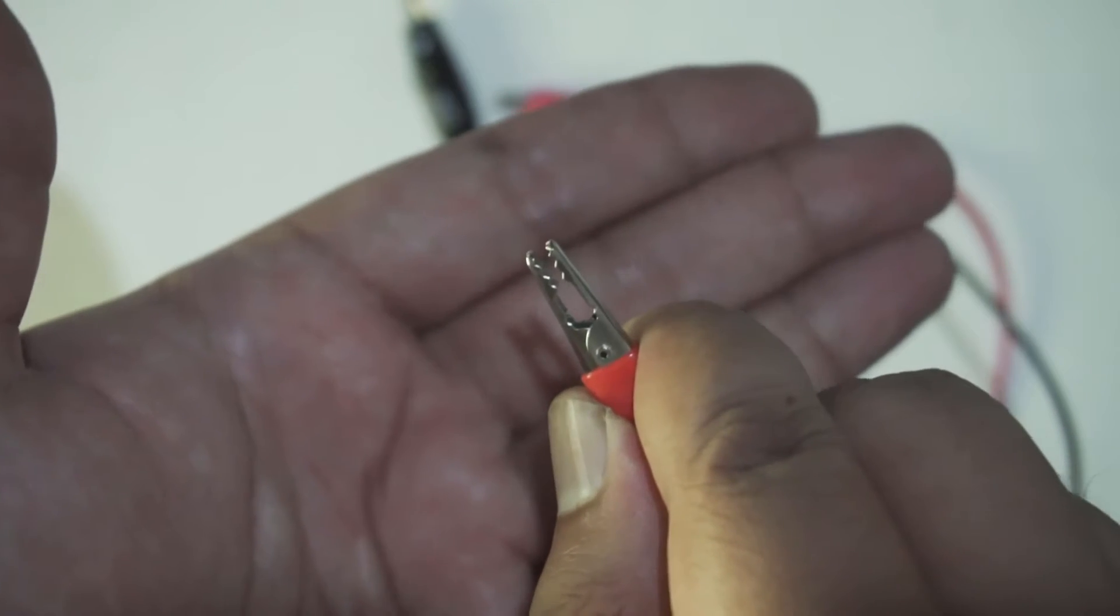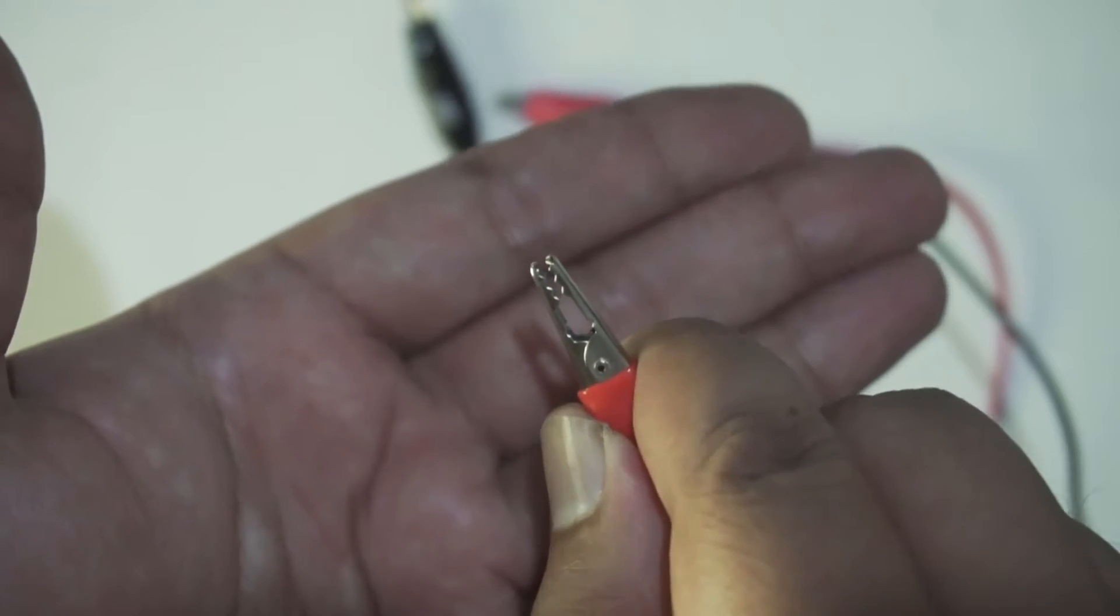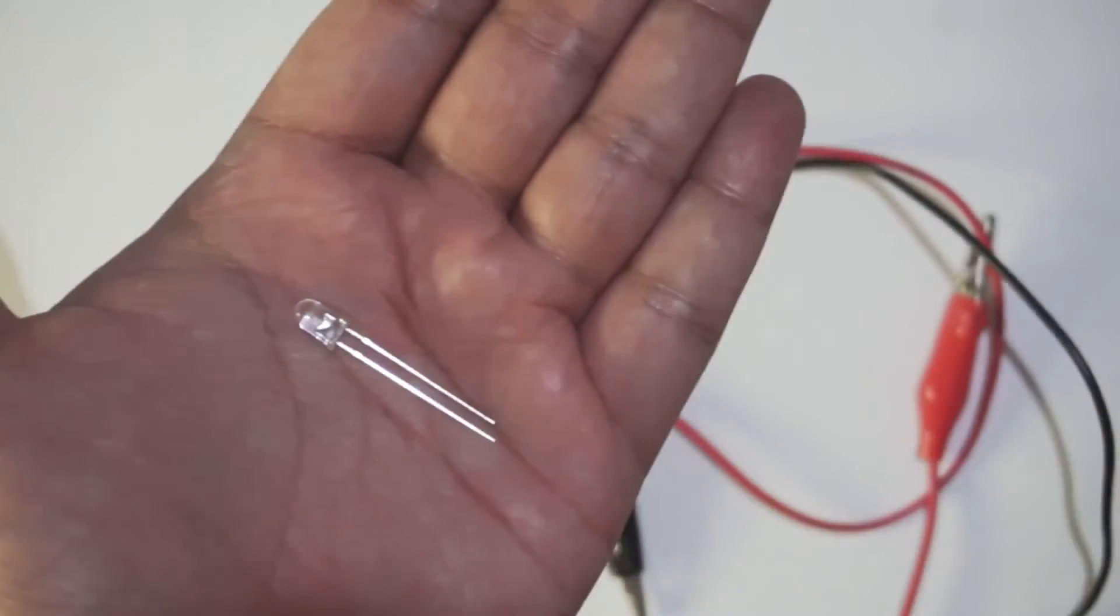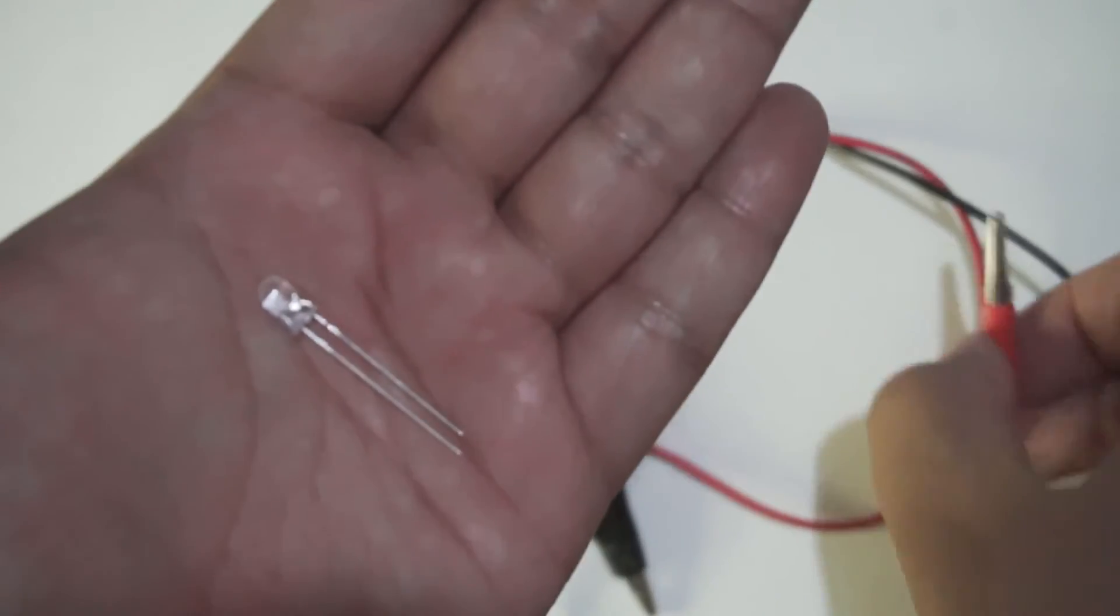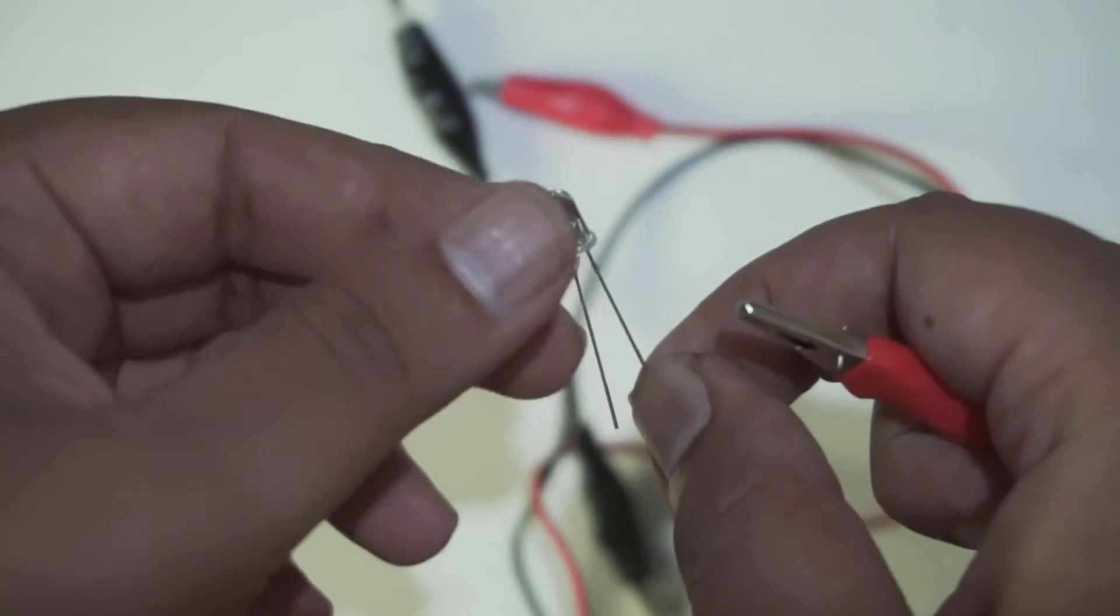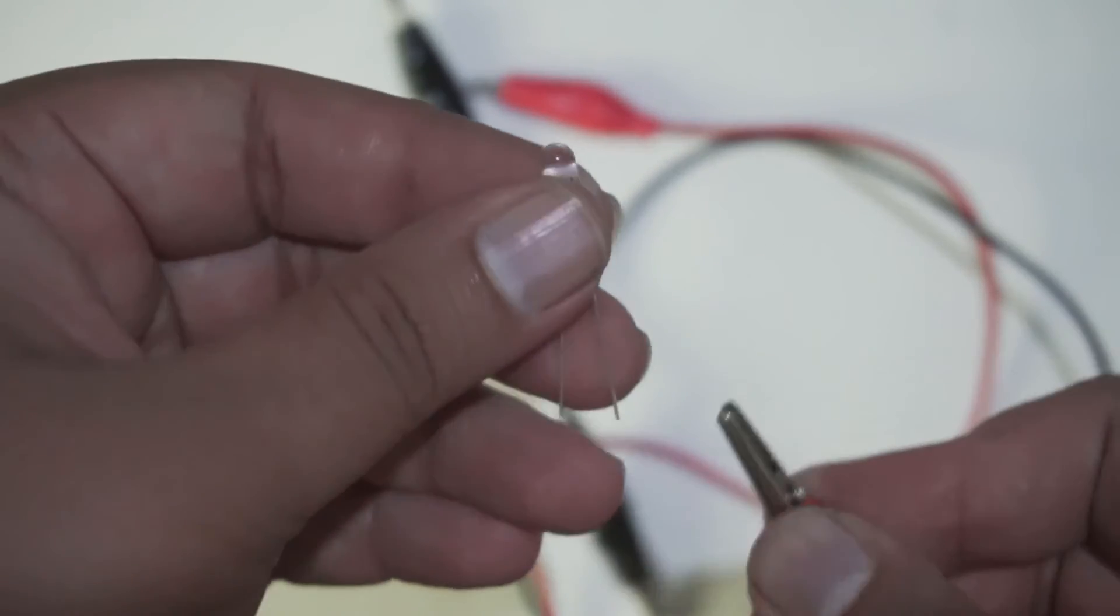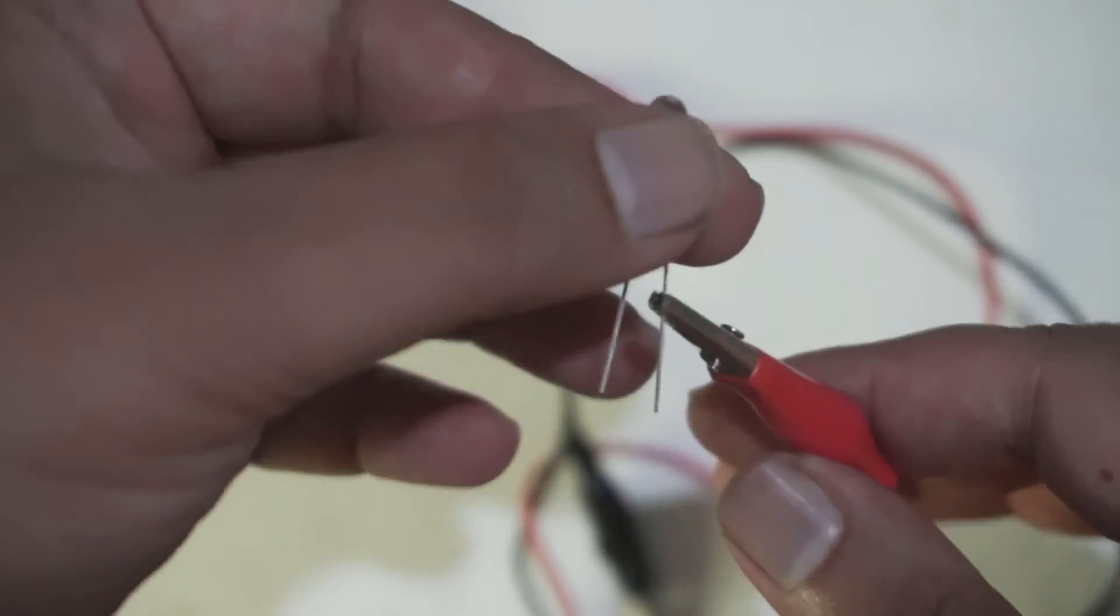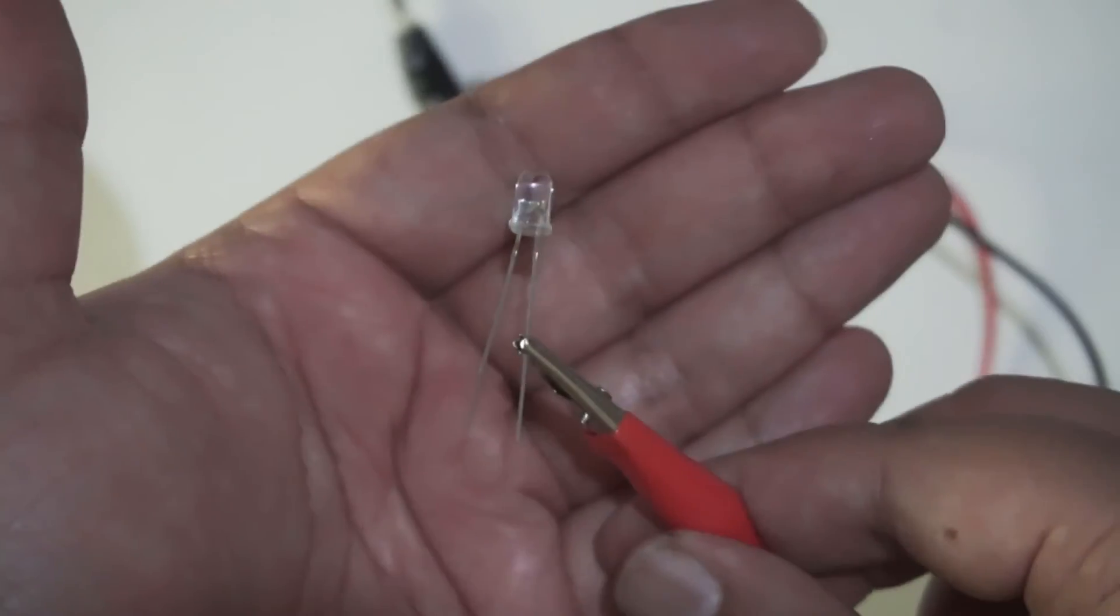Now we can use the alligator clips with normal electronic components also. So this is a LED, it is a blue LED and we can use an alligator clip to make a connection to any one of its legs like this.